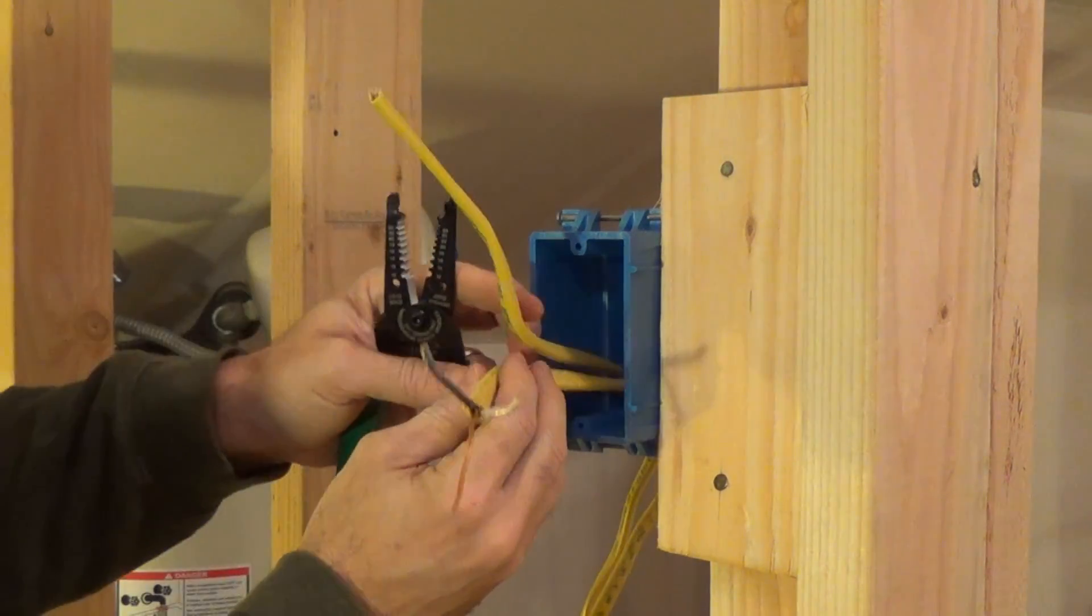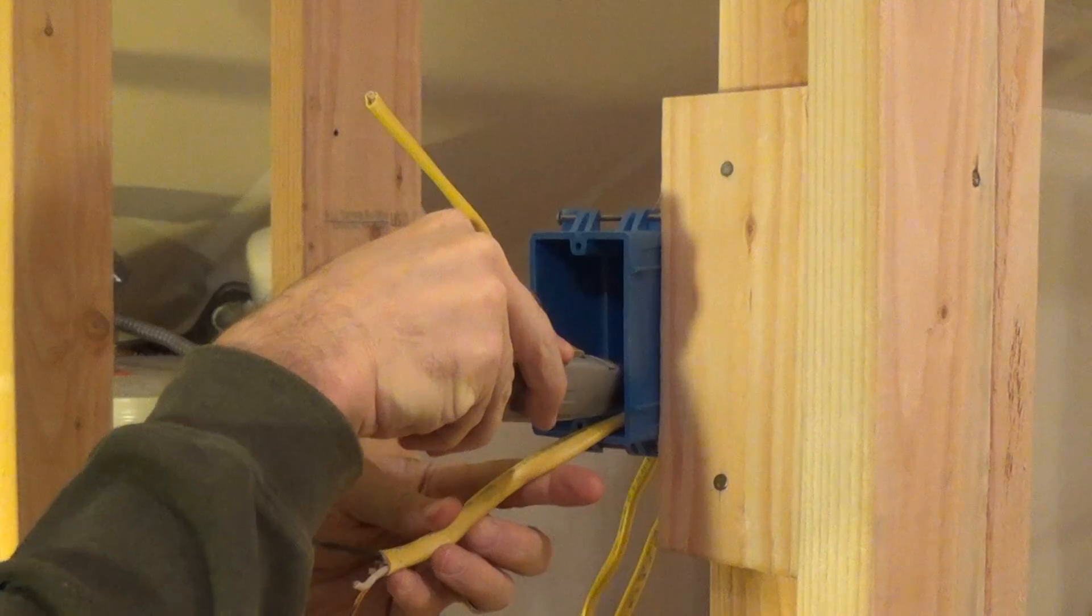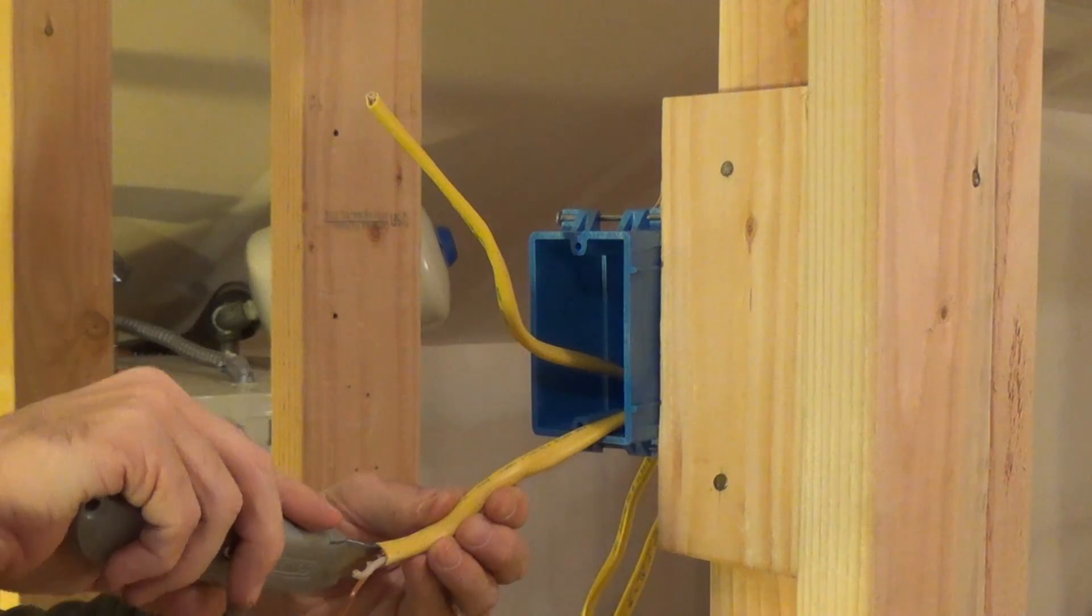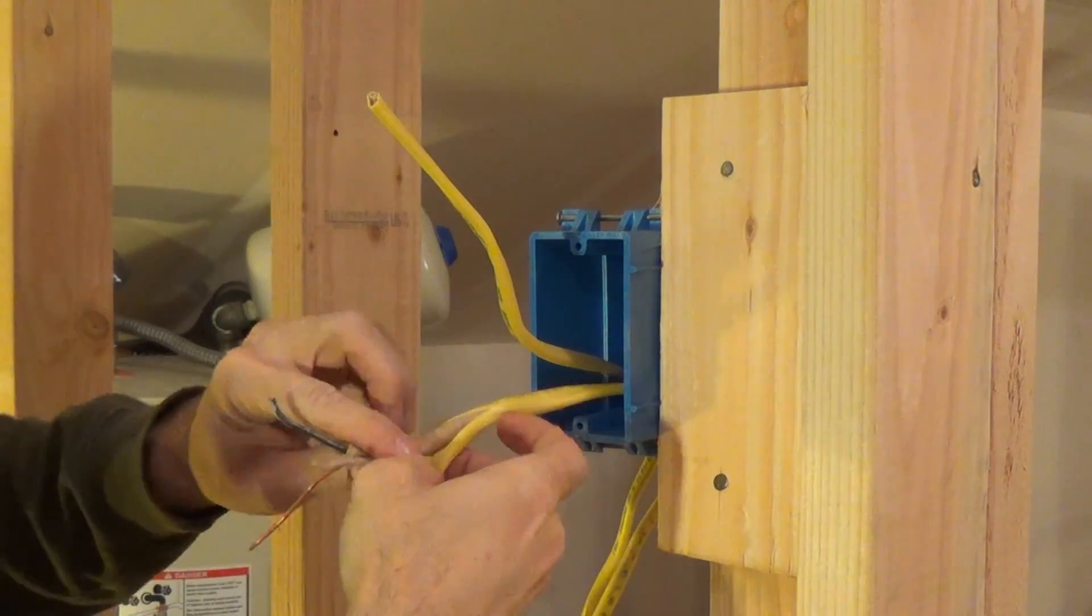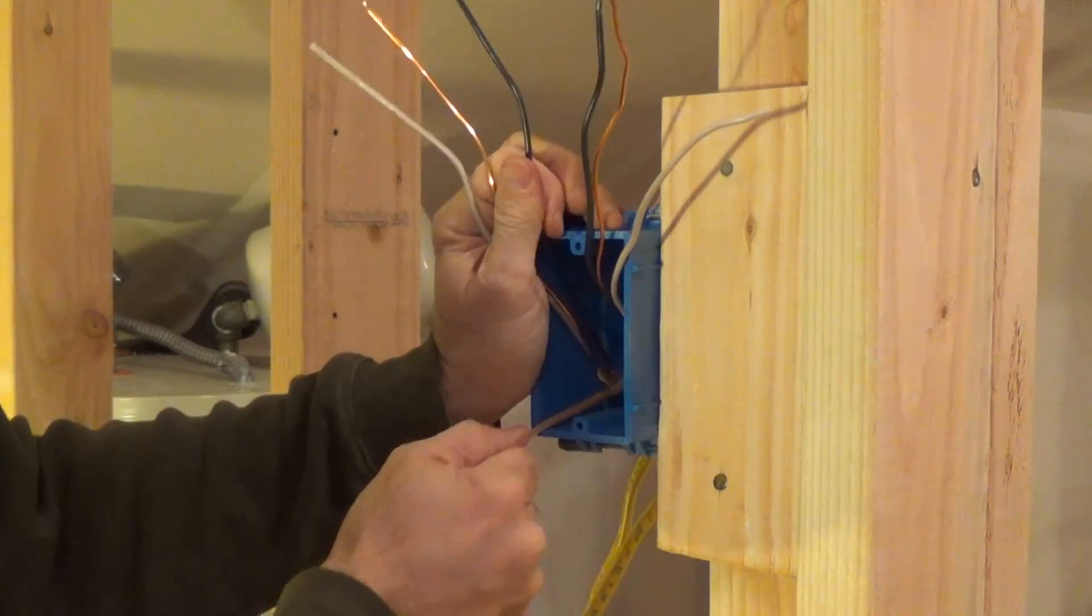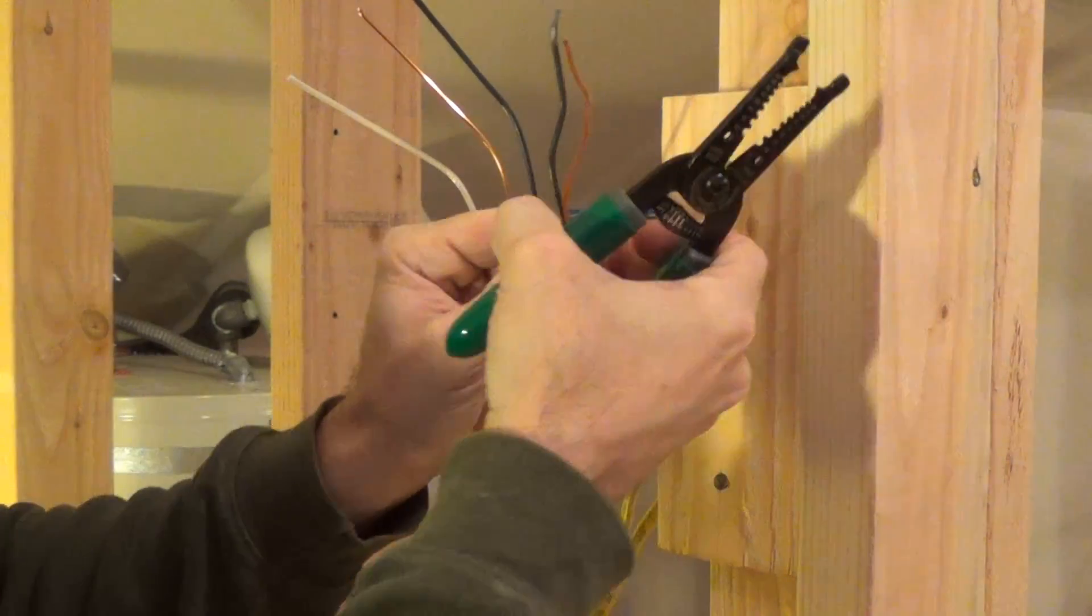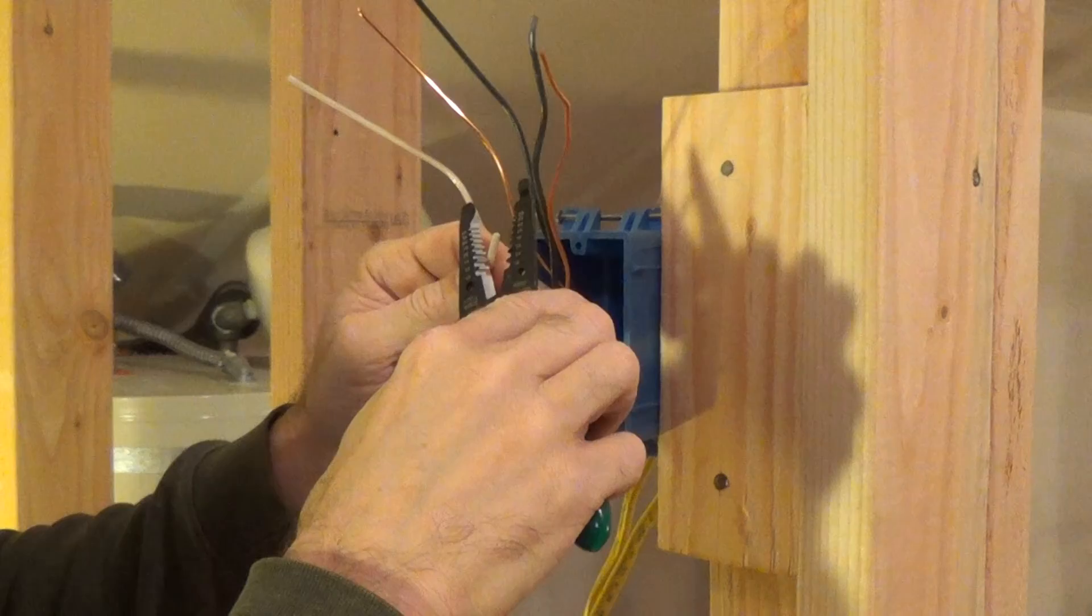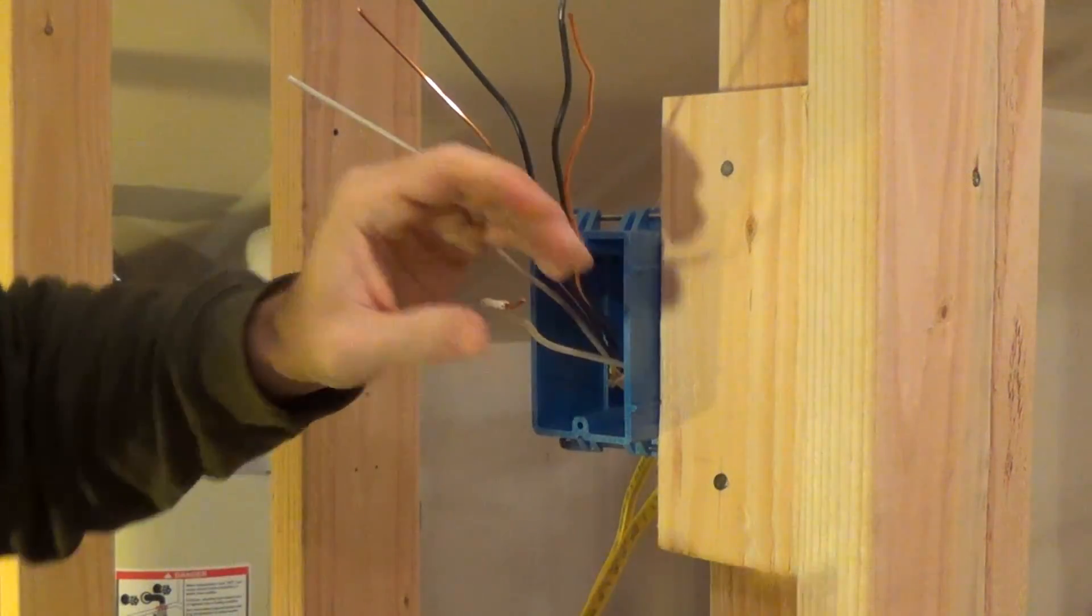First thing I'm going to do is expose more of this wire and I'll just lightly score. Okay and then I'm going to take just a little bit more of this wire, just about three, probably three-fourths of an inch off, just strip about three-fourths off the wires. Just like that.